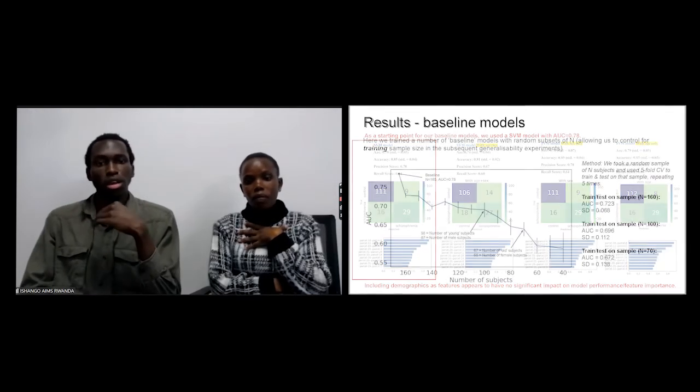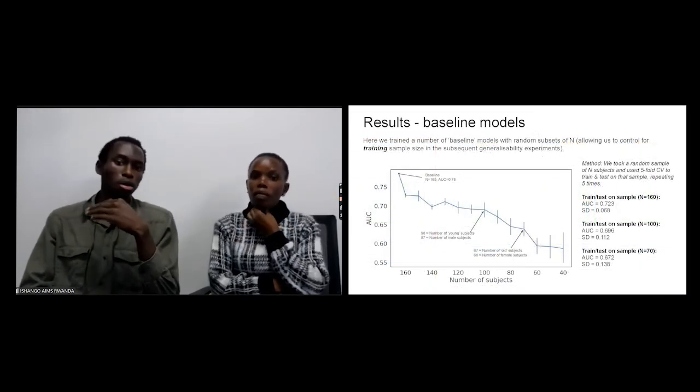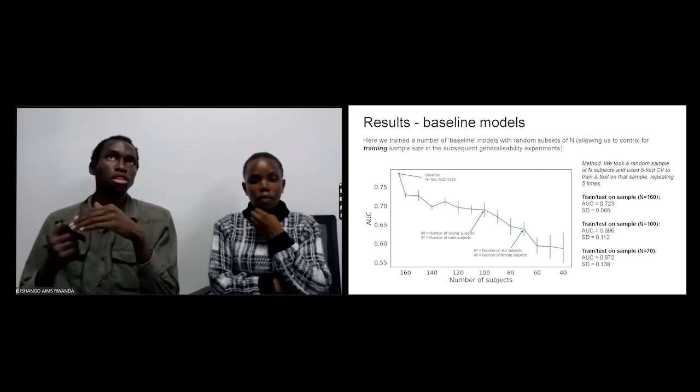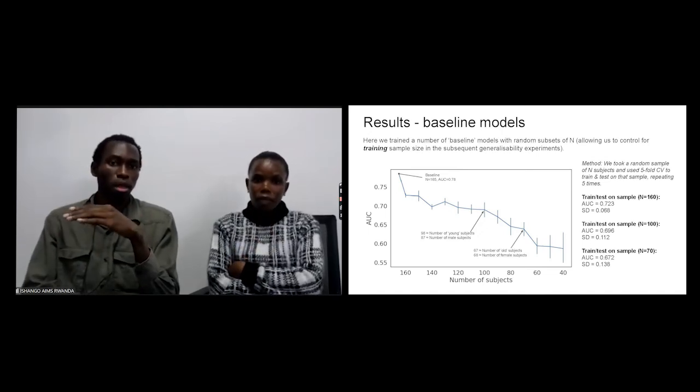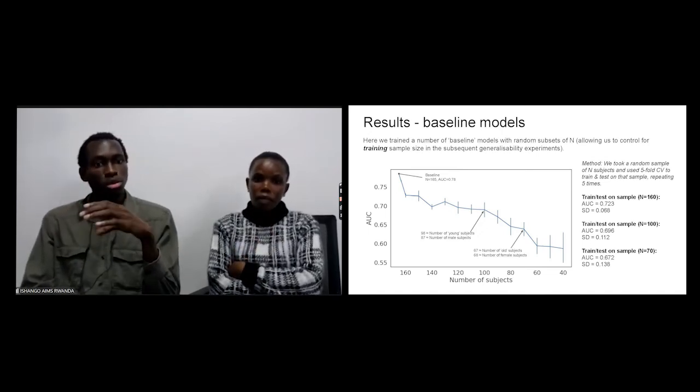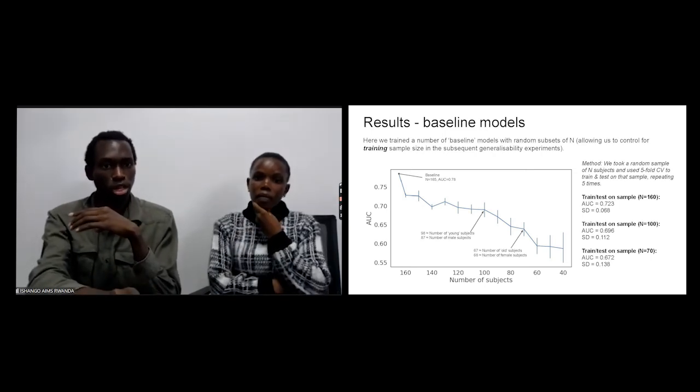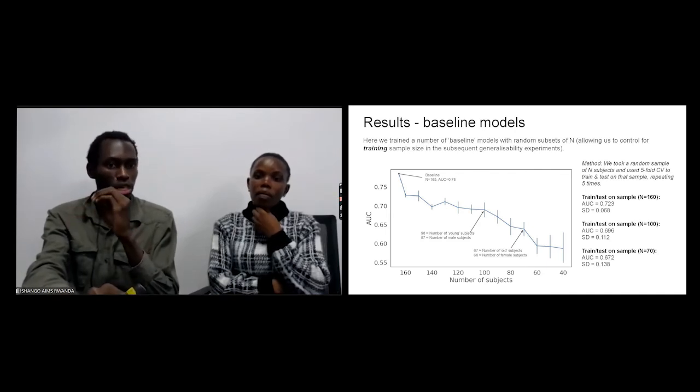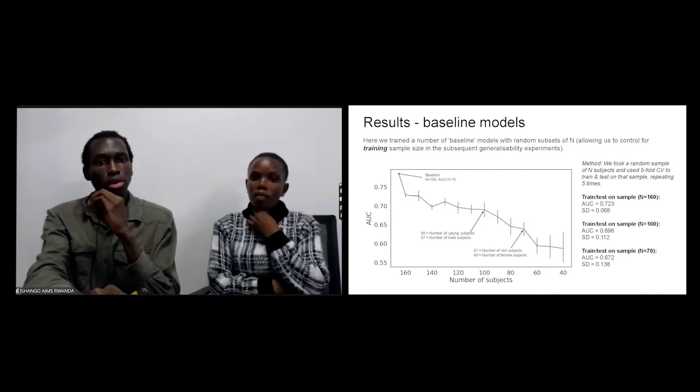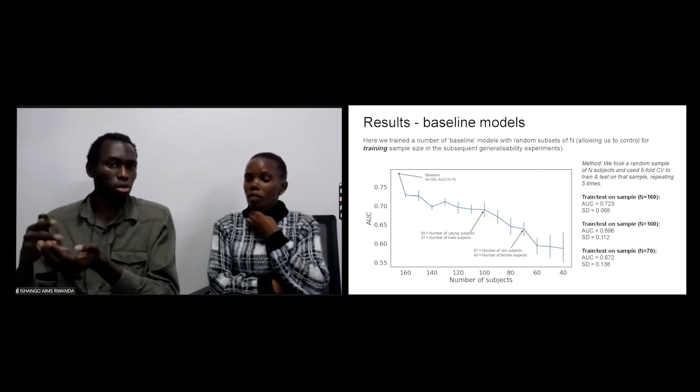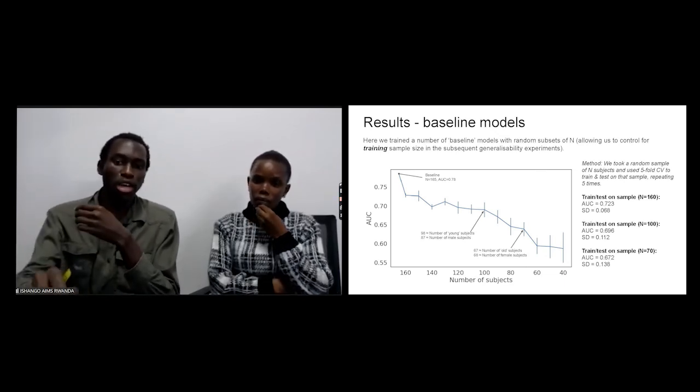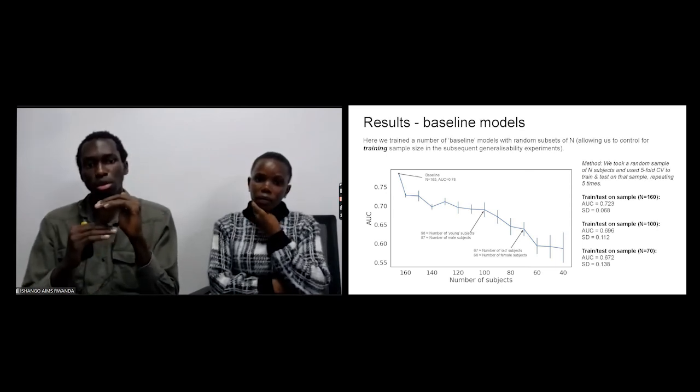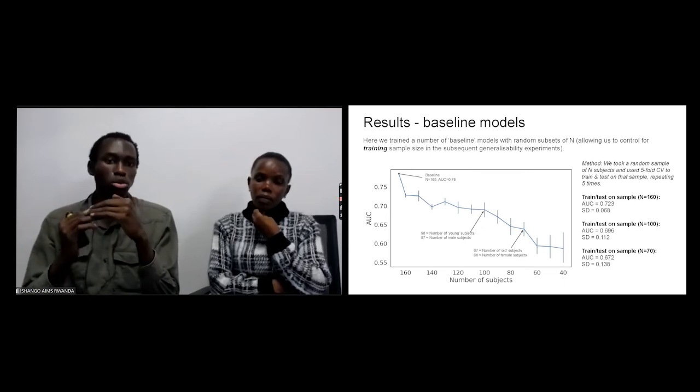Then we wanted to check how our model performed with different demographic groups. Different demographic groups means different sizes of the data. For example, when we trained on the group of young subjects, we have 98 subjects. Then here we have a sample of 98 subjects from the whole dataset, and we can see that the performance is similar. That means the drop of performance is not due to them being young, but because of the size of the data.